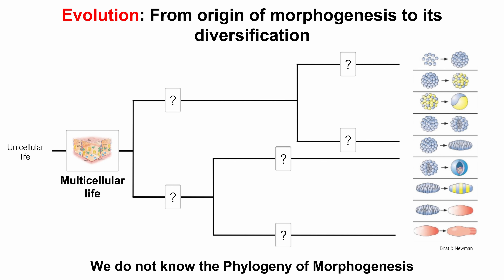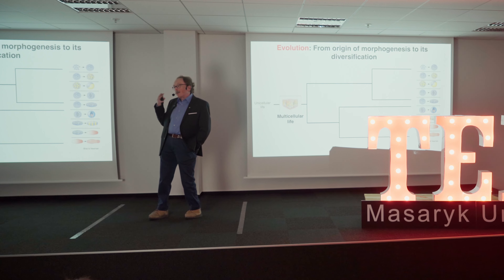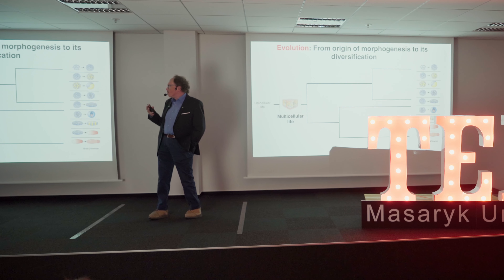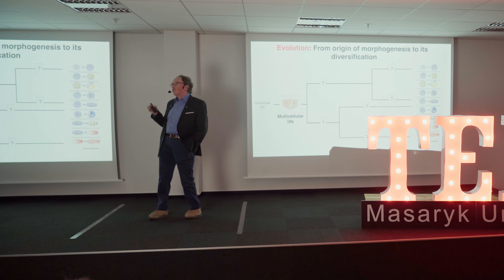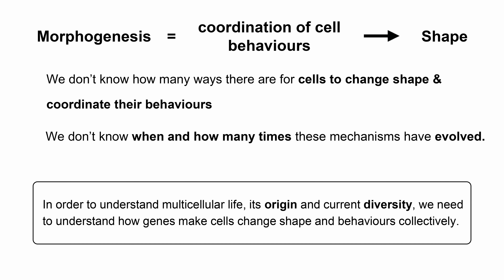Like many answers in biology, the answer is through evolution. We understand a lot about how multicellular life arose from unicellular life, because believe it or not, this happened many times. We also now have a very good catalogue of how cells can change shape and create form. However, despite the fact that we understand the origin of all animals, we do not understand very well how these processes evolve — in other words, we do not understand the phylogeny of morphogenesis. And we need to understand it.